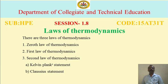There are 3 laws of thermodynamics. The 1st one is the 0th law of thermodynamics, the 2nd one is the 1st law of thermodynamics, and the 3rd one is the 2nd law of thermodynamics. In the 2nd law of thermodynamics, there are 2 statements: the 1st one is the Kelvin-Planck statement and the 2nd one is the Clausius statement.